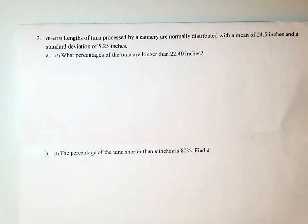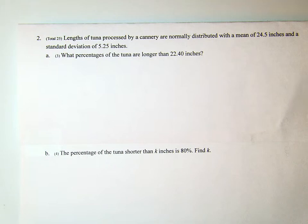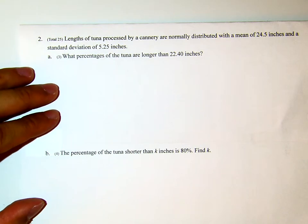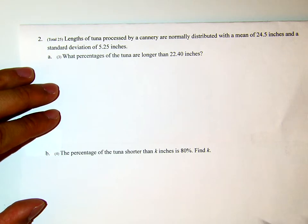The following is Fall 2010 Math 227 Test 2. In this video I will do number 2, parts a, b, and c. Question number two: lengths of tuna processed by a cannery are normally distributed with a mean of 24.5 inches and standard deviation of 5.25 inches. Part a: what percentage of the tuna are longer than 22.40 inches?